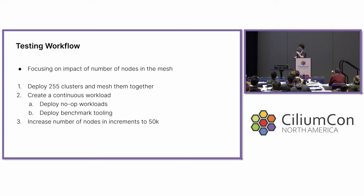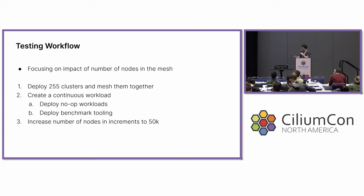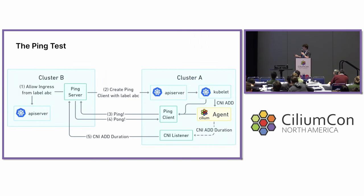So let's get into how we looked at this. We created a workflow for testing where we were focusing on the number of nodes in the mesh as our primary variable. We created 255 clusters and meshed them all together, and then we created a continuous workload that consisted of two parts. The first was a no-op workload — essentially 10 pods per cluster — to get some identities and endpoints working in the Cluster Mesh API server. Then we deployed some benchmark tooling in order to add load on the Cluster Mesh API server. We slowly increased the number of nodes in increments until we got to 50,000.